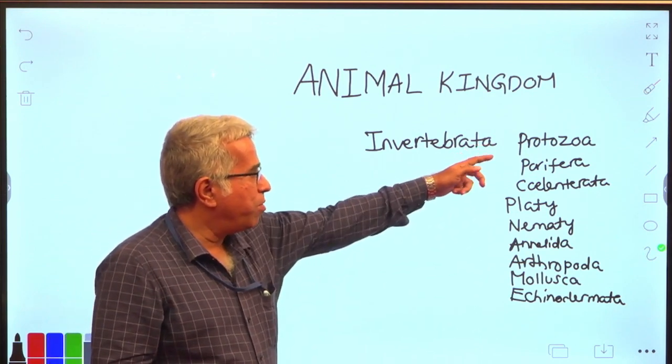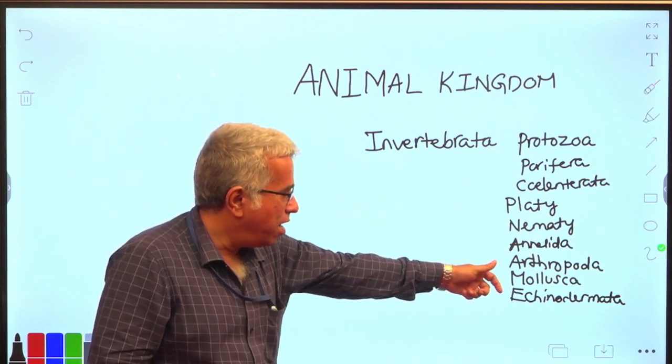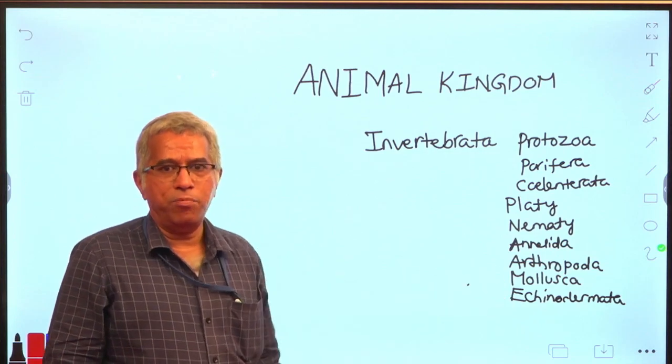Invertebrata includes protozoa, porifera, coelenterata, platyhelminthes, nematihelminthes, annelida, arthropoda, mollusca, and echinodermata.